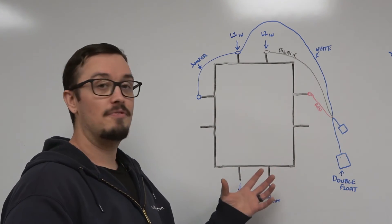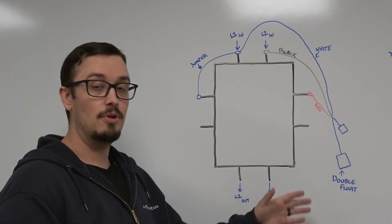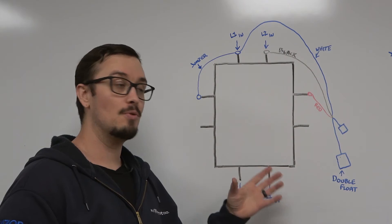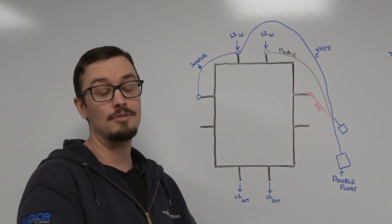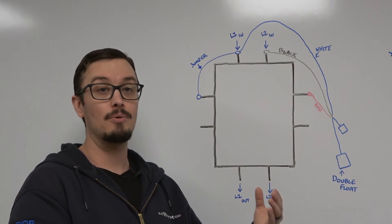Here we've got this configuration today - a double float switch. It has an internal relay built into the float switch mechanism, and thus that switch has three wires because we also have to provide power to the relay coil.